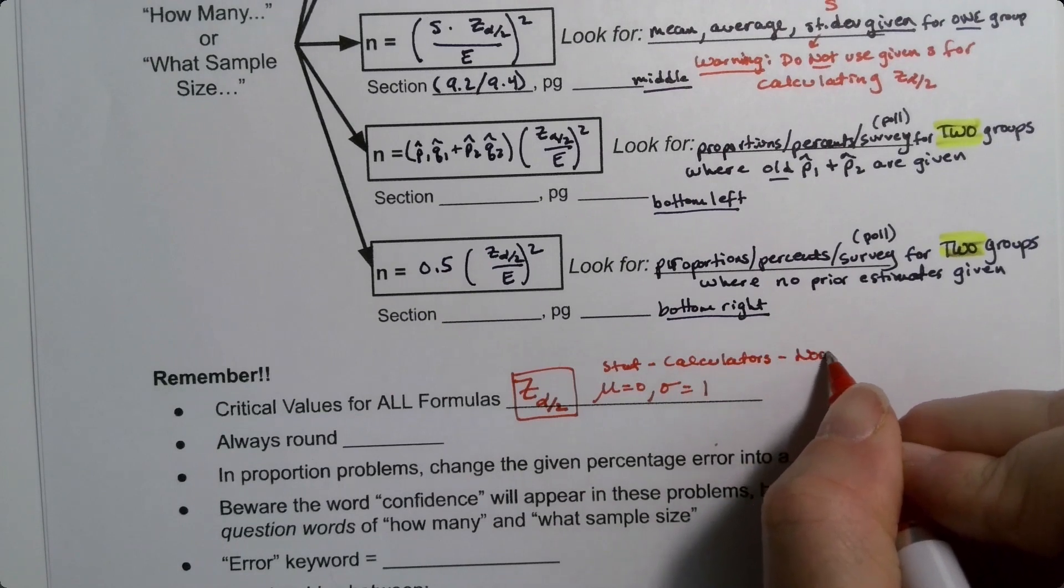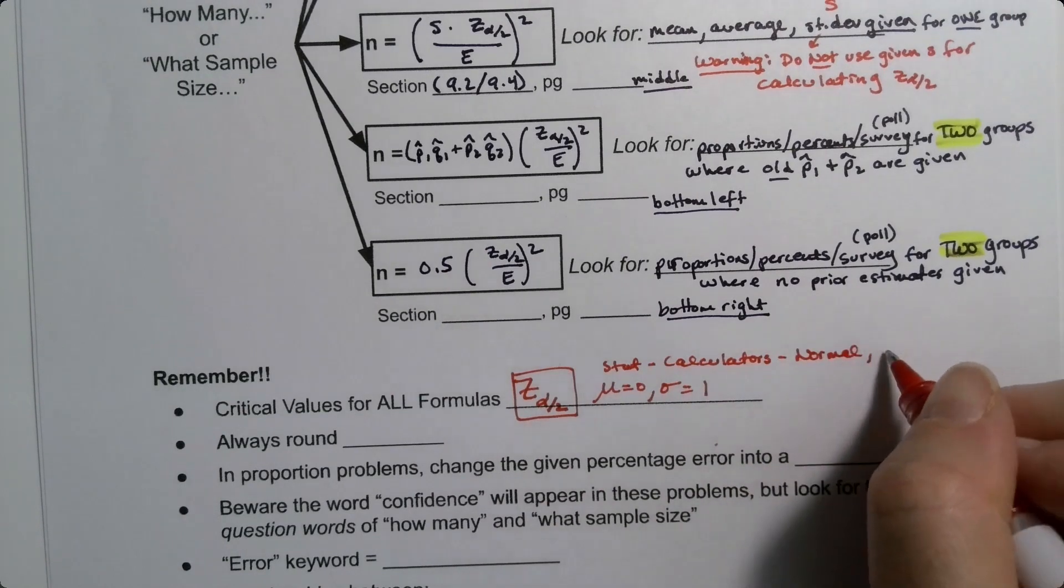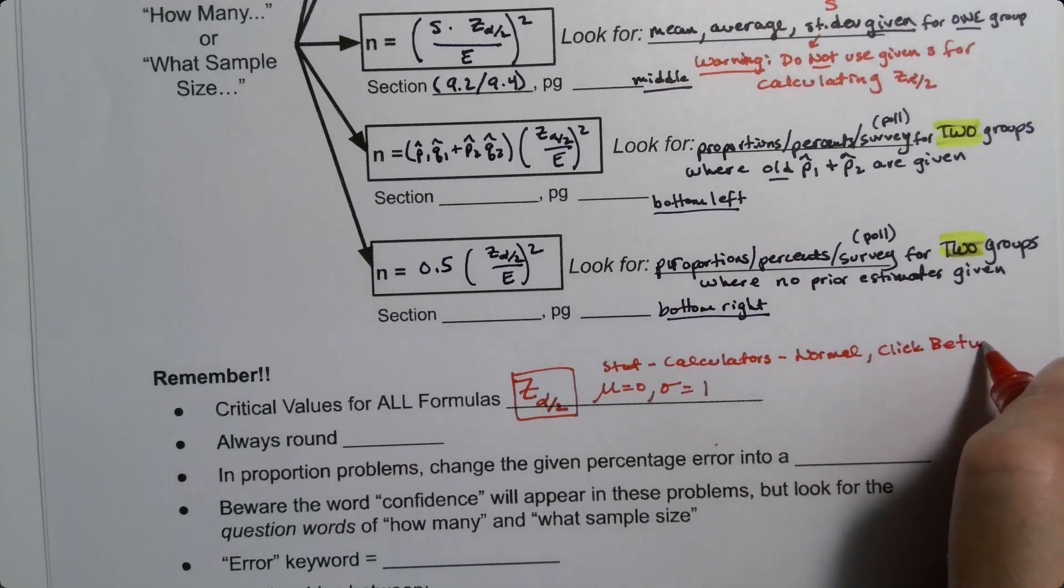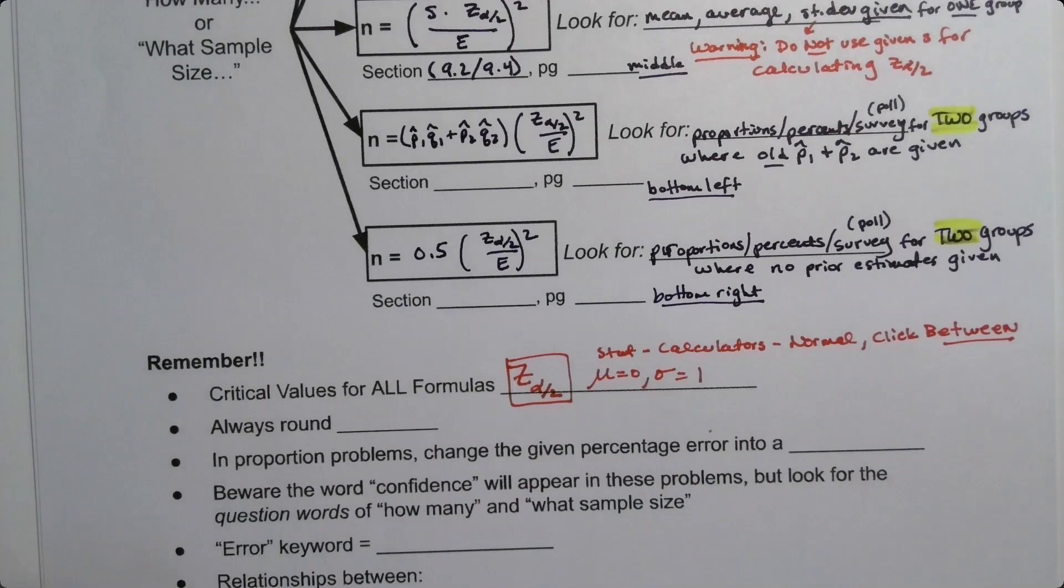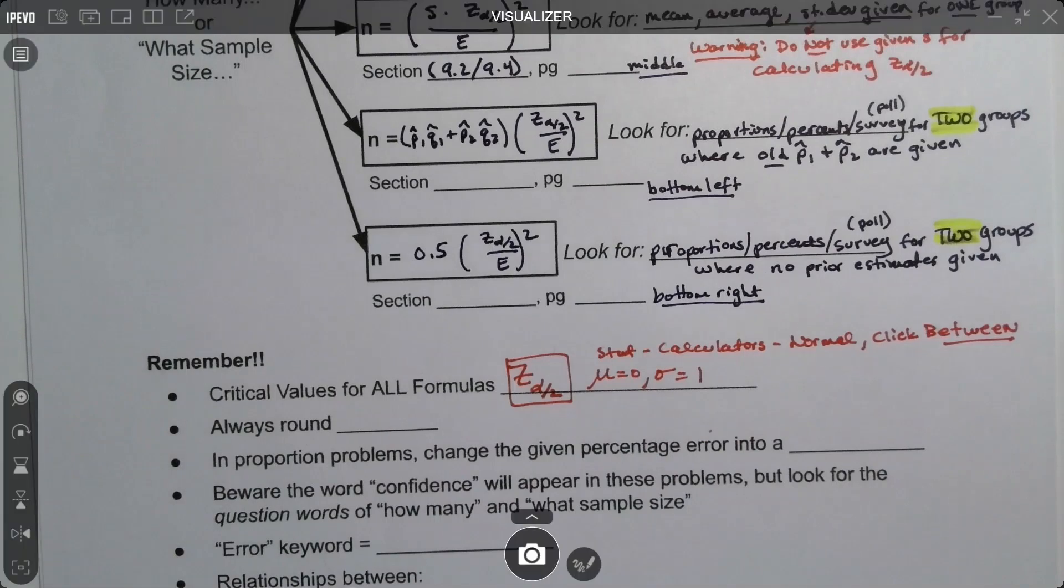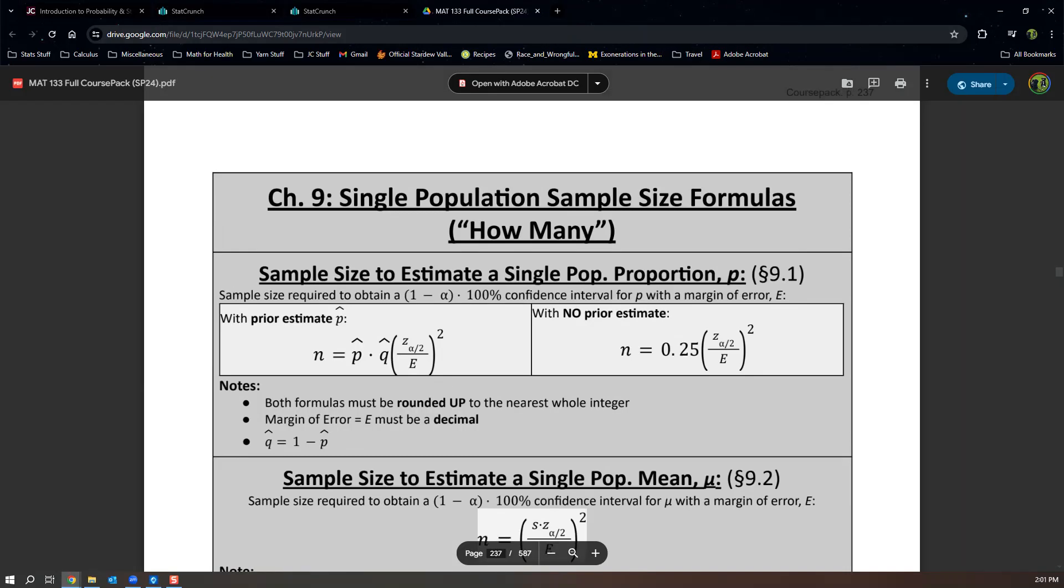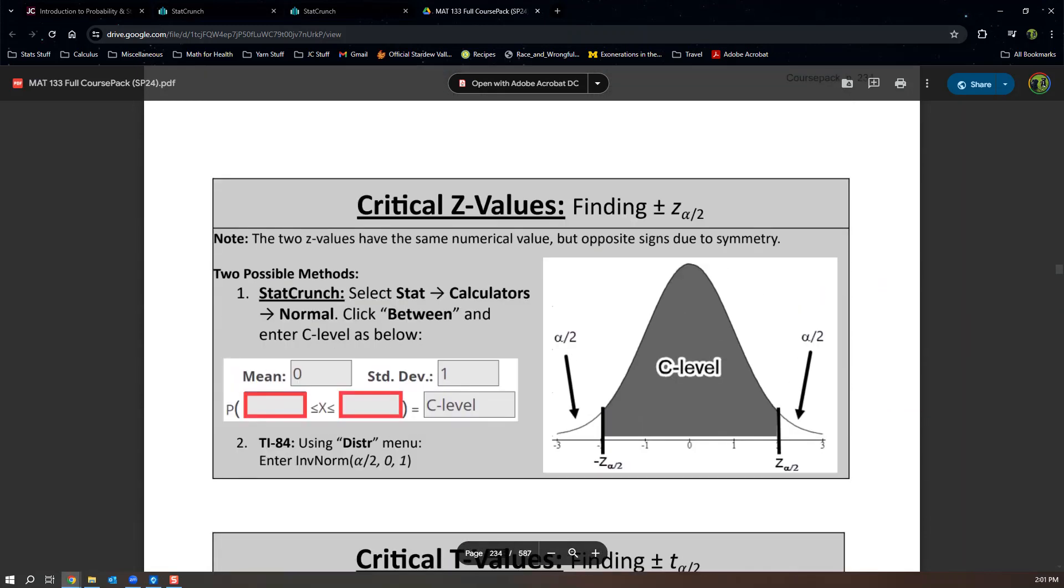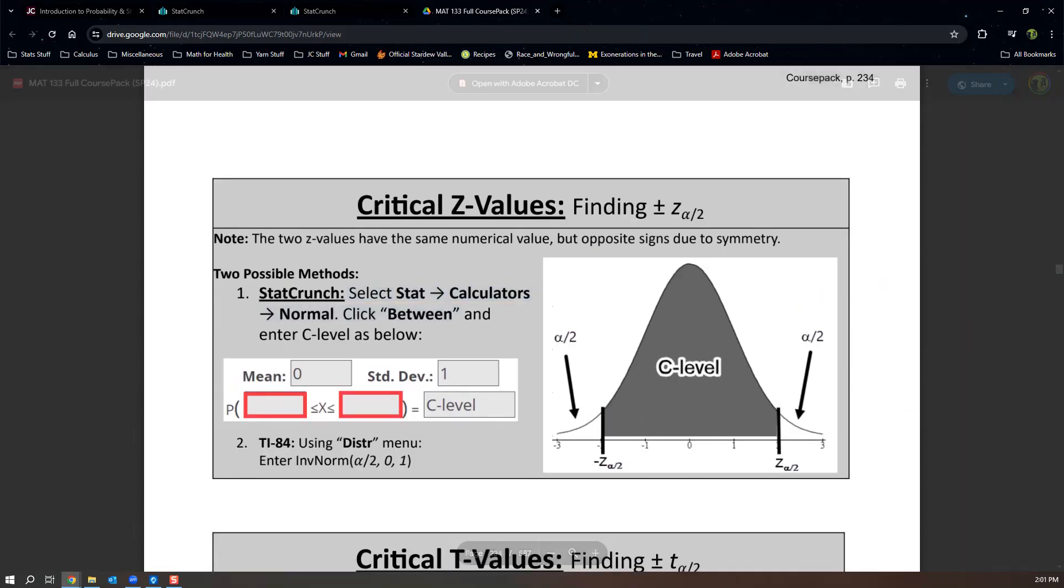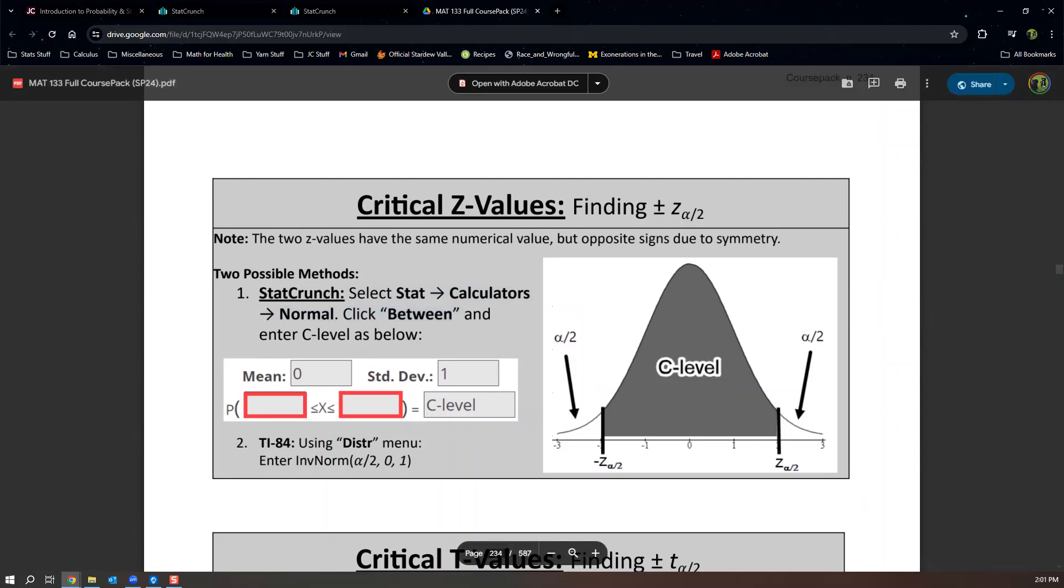Calculators, normal, and we click between. Those instructions are also in your exam notes packet, but there they are as well. Just so you can see it, it's back a couple pages. It's right here. Stat, calculators, normal, click between. Always use 0 and 1 to find it, and you enter your C-level over to the right of the equal sign.